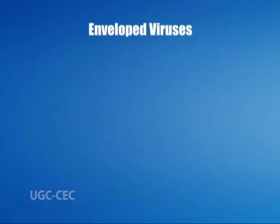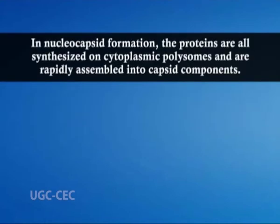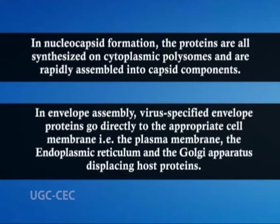Now we will come to enveloped viruses. In this group, viral proteins are first associated with the nucleic acid to form the nucleocapsid, which is then surrounded by an envelope. In nucleocapsid formation, proteins are synthesized on cytoplasmic polysomes and rapidly assembled into capsid components. In envelope assembly, virus-specified envelope proteins go directly to the appropriate cell membrane — that is, the plasma membrane, the endoplasmic reticulum, and the Golgi apparatus — displacing host proteins. The carbohydrates and lipids are produced by the host cell. The viral envelope has the lipid composition of the membrane where its assembly takes place, for example the plasma membrane for orthomyxoviruses and paramyxoviruses.